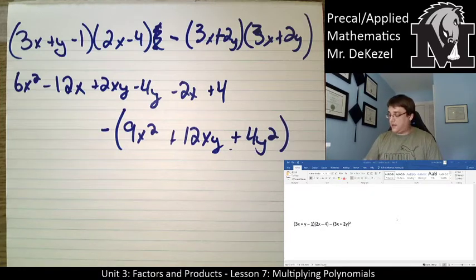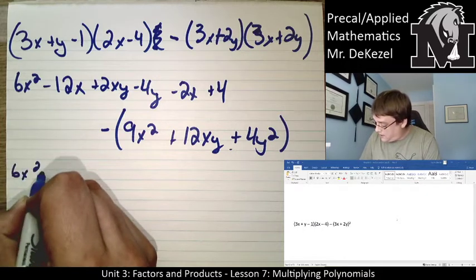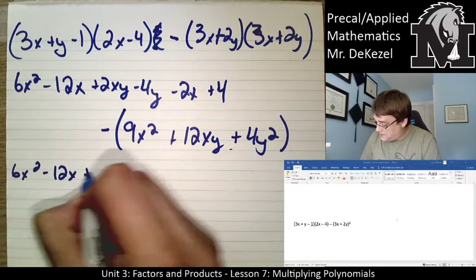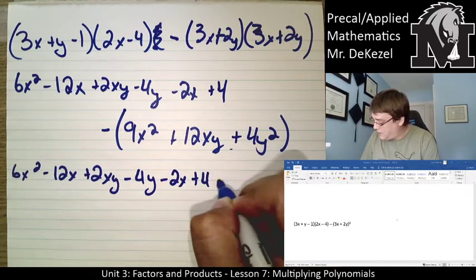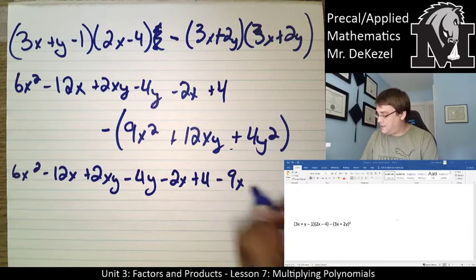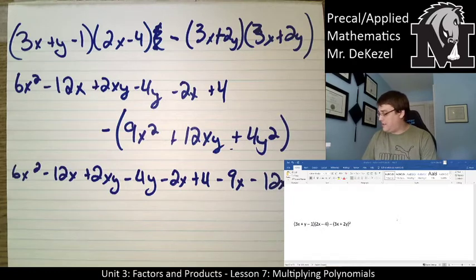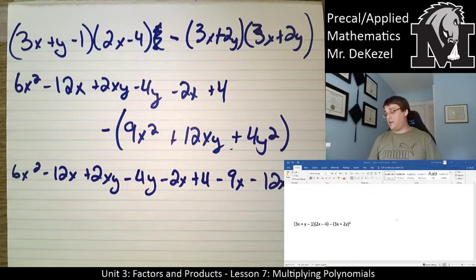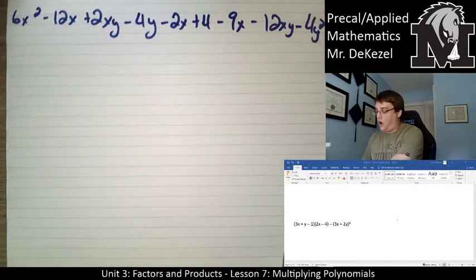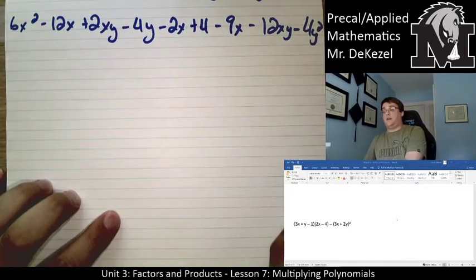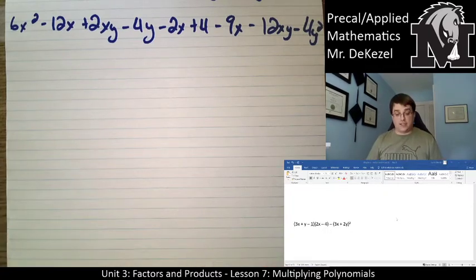I'm going to do it in blue. See if I can make it all in one this time. This is 6x squared minus 12x plus 2xy minus 4y minus 2x plus 4 minus 9x squared minus 12xy minus 4y squared. We apply that negative through to all of those values in the brackets. I am now going to use different colored markers to combine like terms.